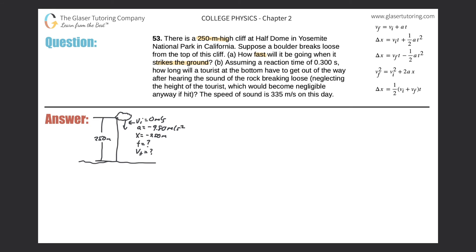Question A is asking how fast will it be going when it strikes the ground, so we're being asked about the final velocity. I want to think about an equation that relates the final velocity to the initial velocity, acceleration, and displacement. We know the fourth kinematic equation does that on the right-hand side. So for A, the final velocity squared equals the initial velocity squared plus two multiplied by the acceleration and by the displacement.